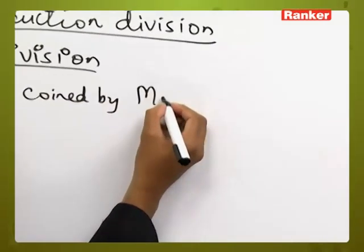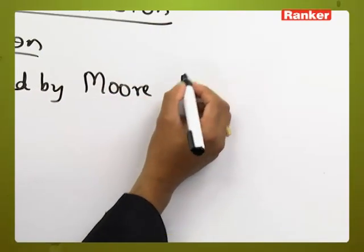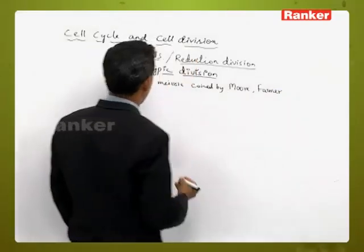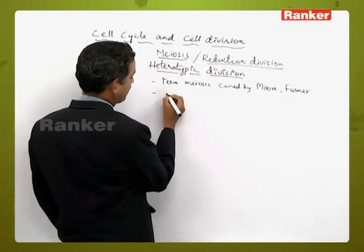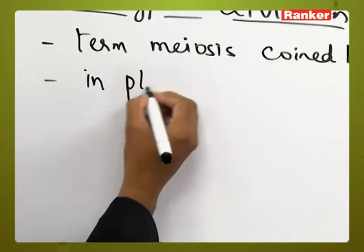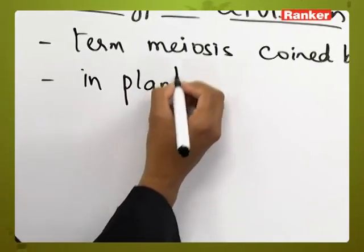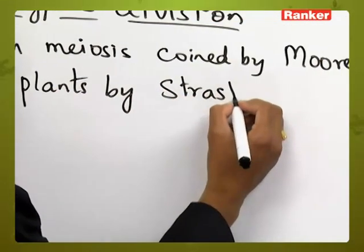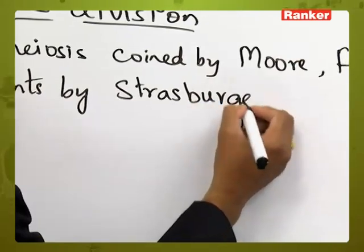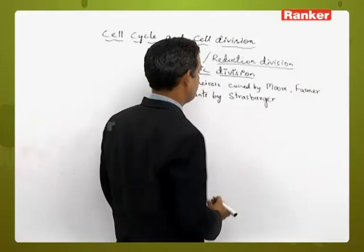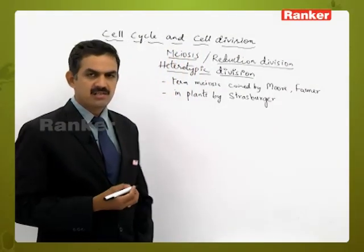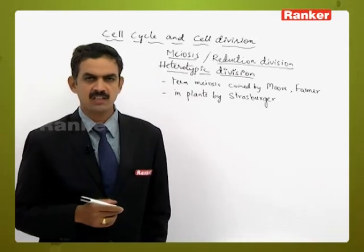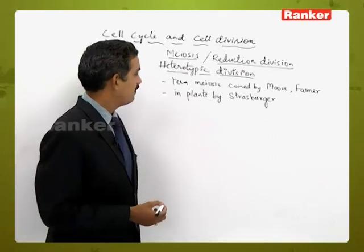The term meiosis was coined by Moore and Farmer. Meiosis was discovered in plants by Strasburger, and many other scientists are related to the discovery of meiosis in animals.